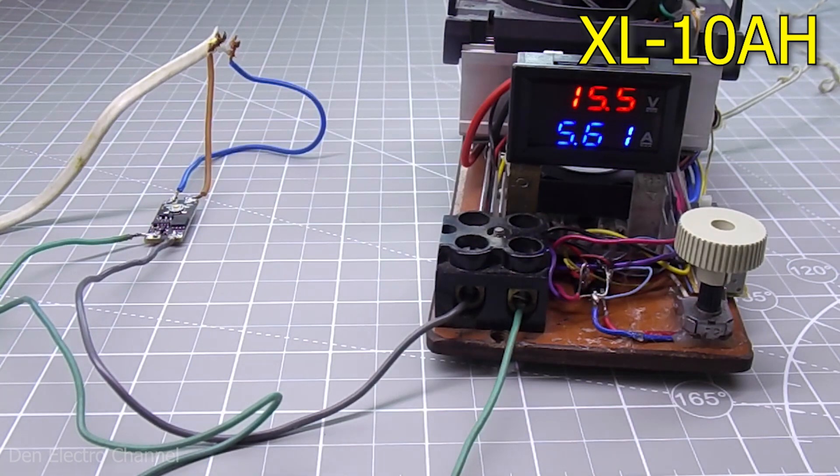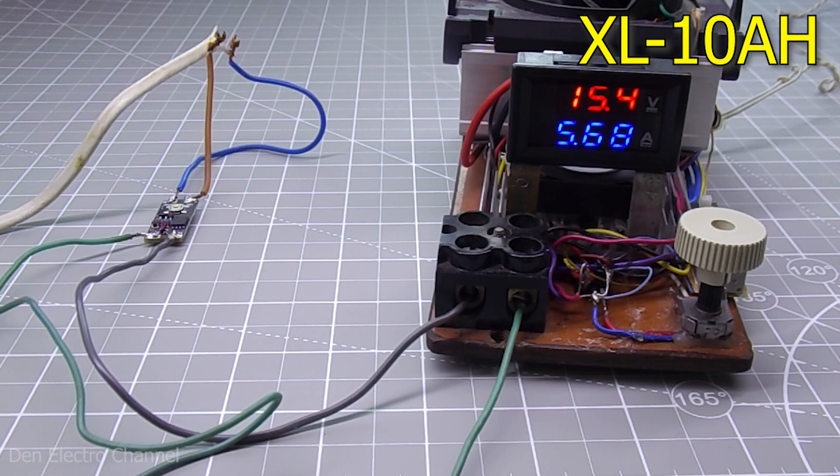Unfortunately, in this test, due to problems with my equipment, it will not be possible to immediately check the declared characteristics of the module. Therefore, I will check the maximum current and maximum voltage separately. I'll lower the voltage to 12 volts and now you can increase the current.